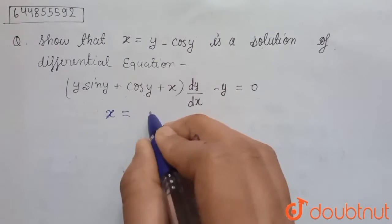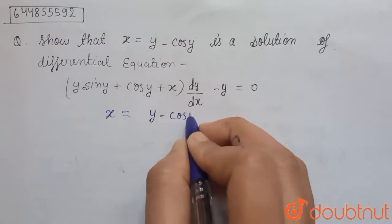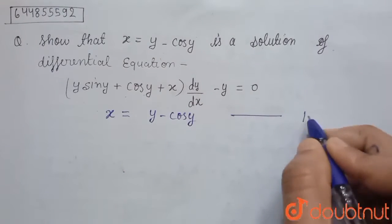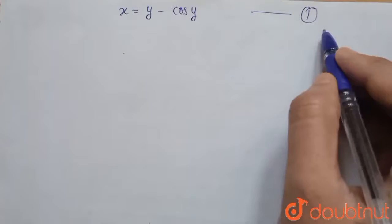So here we have given x equals to y minus cos y. Suppose this is our equation. Now when we differentiate this, this is equation 1.